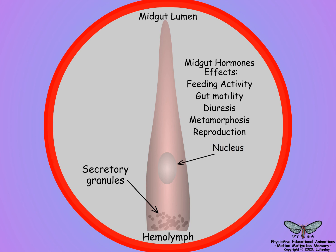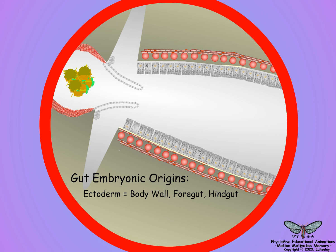During insect embryogenesis, the ectoderm layer gives rise to the epidermal cells of the outer body wall and the foregut and hindgut, all of which secrete a protective chitin-containing layer of cuticle on their outer surface. However, midgut epidermal cells are derived from the embryonic endoderm layer and do not secrete a layer of surface cuticle. Instead, midgut cells secrete a loose membrane-like peritrophic matrix that lines the midgut lumen and encloses the food.